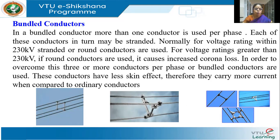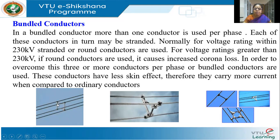In bundled conductors you may have two, three, four, or six conductors per phase arranged like a hexagon. Between the lines at suitable distances you will have spacers to prevent conductors from swinging and hitting each other. All conductors in the bundle carry current of the same phase. Bundled conductors have less reactance due to more GMD — geometric mean distance — which will reduce the voltage drop in the line, improving the voltage profile.